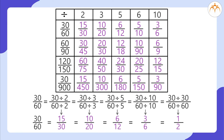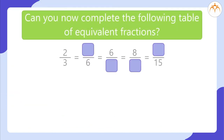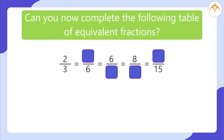Can you now complete the following table of equivalent fractions? 2 divided by 3 is equal to blank divided by 6, is equal to 6 divided by blank, is equal to 8 divided by blank, is equal to blank divided by 15. The answer is: 2/3 = 4/6 = 6/9 = 8/12 = 10/15.